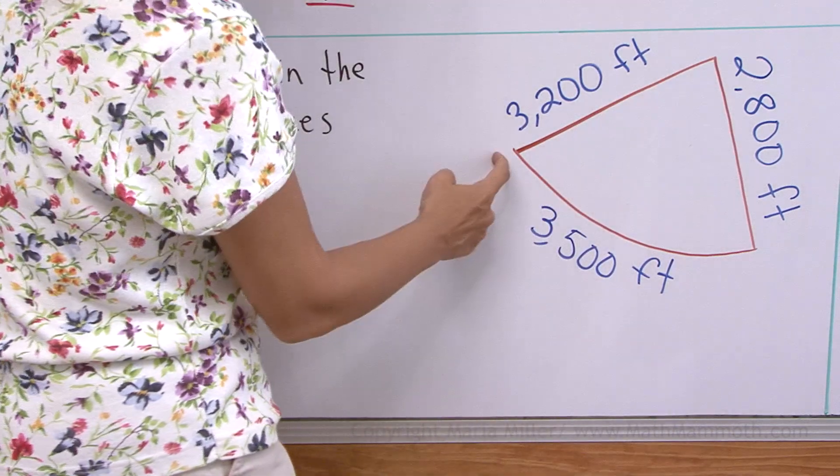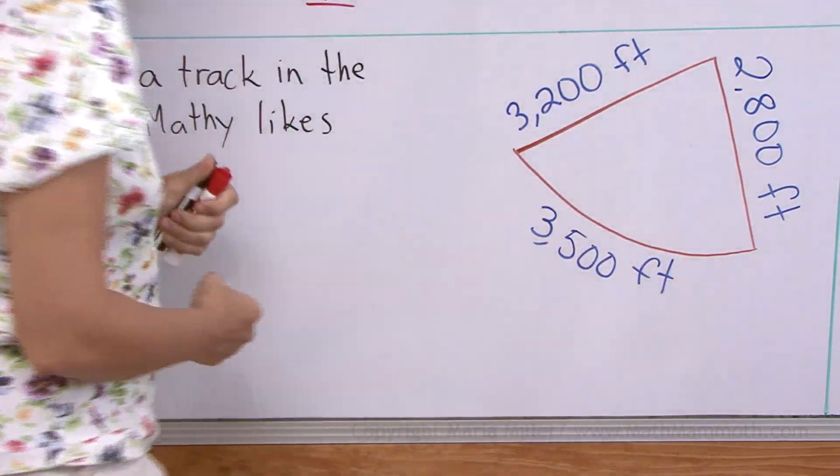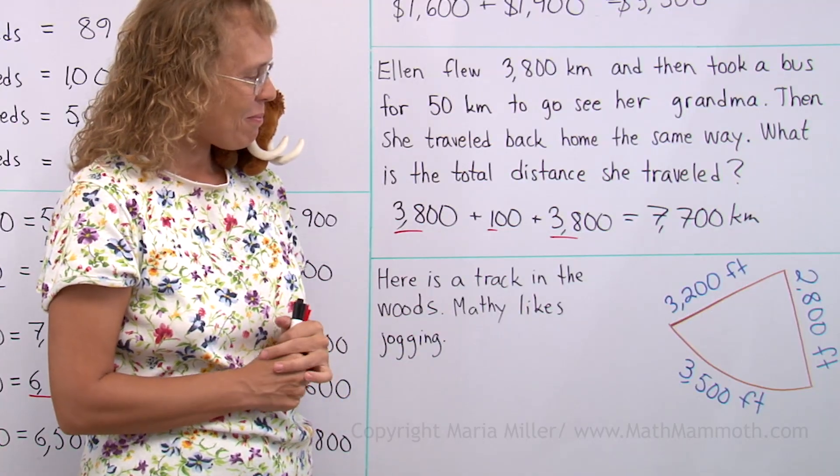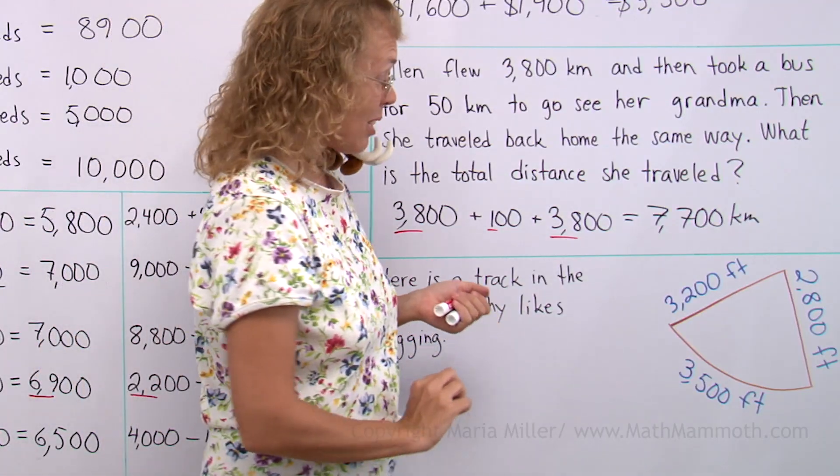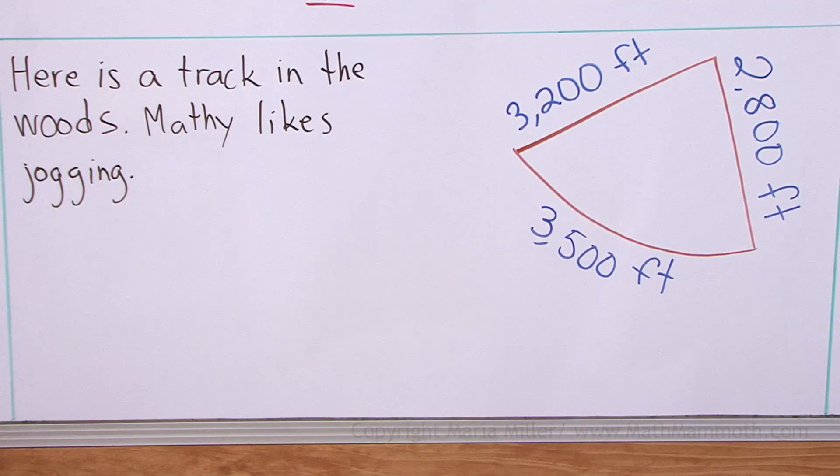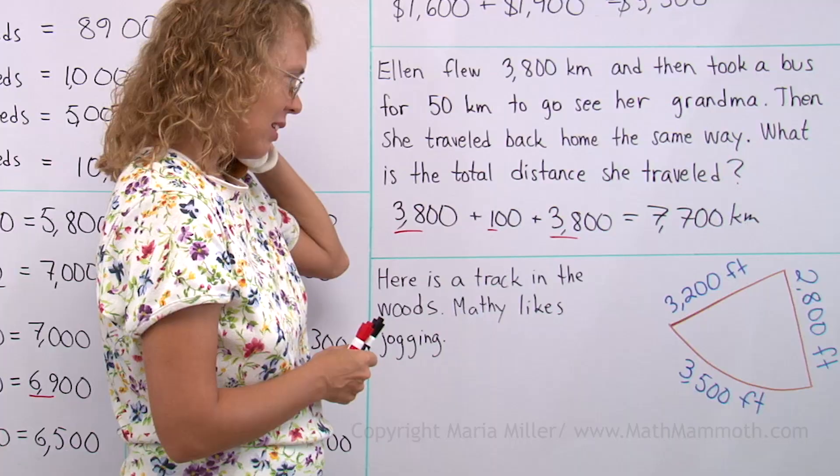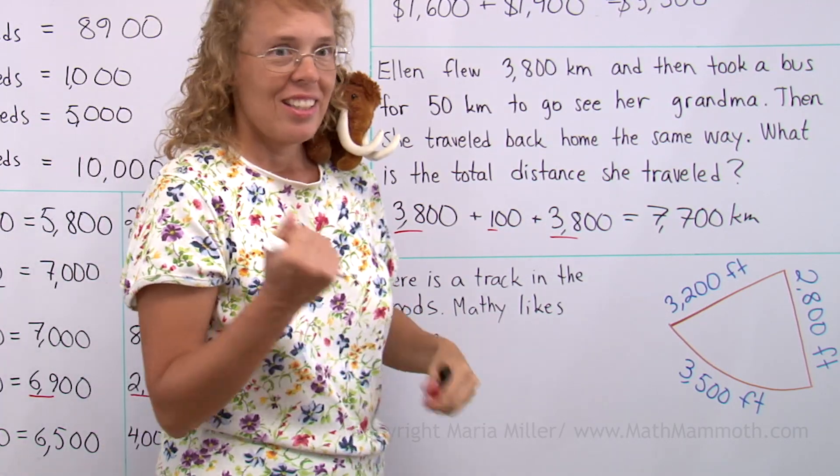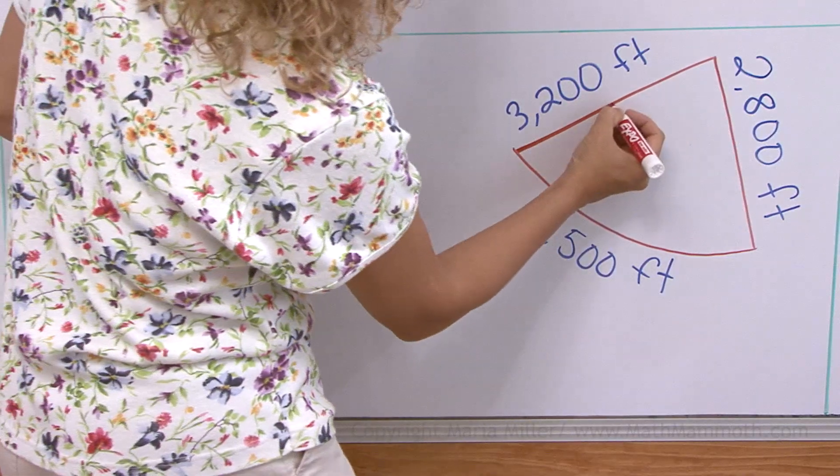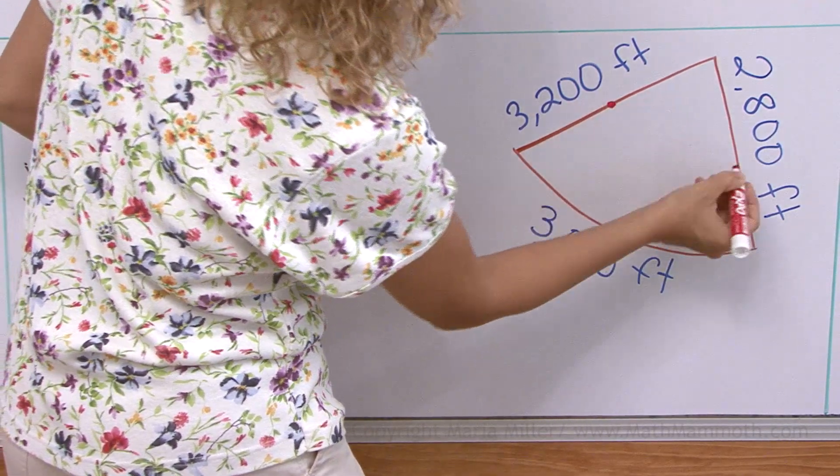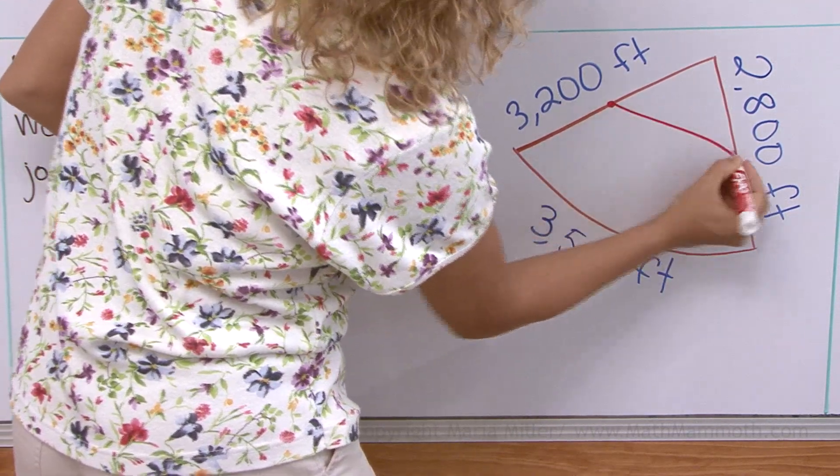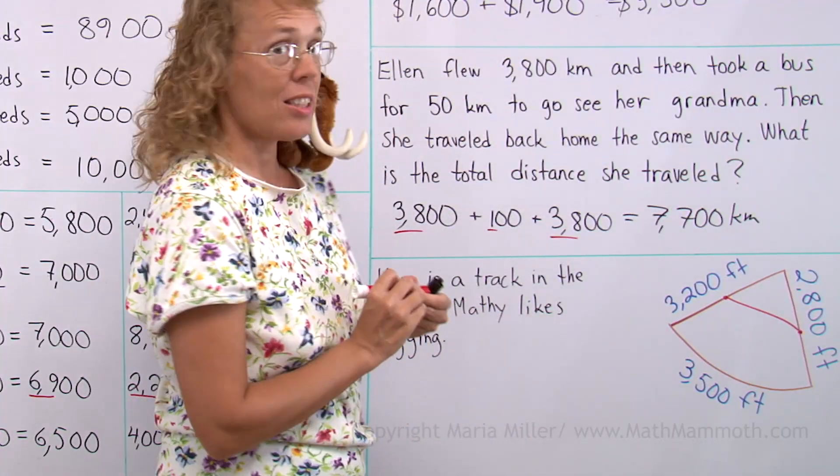What's the total distance? Yeah, of course. We can make a question. What's the total distance Matthew jogs if he goes once around the track? But can you make something more interesting? Some other kind of word problem? How about the shortcut? Let's make a shortcut. Maybe you're tired, Matthew. You don't want to jog all the way? Let's make a shortcut from here to here. What if Matthew takes this shortcut? Then what distance does he jog?